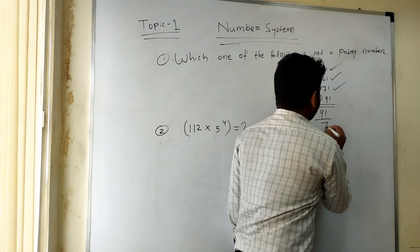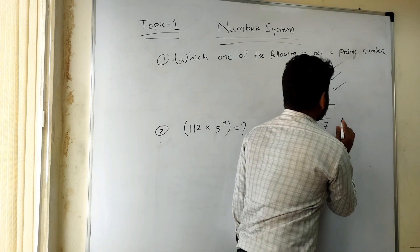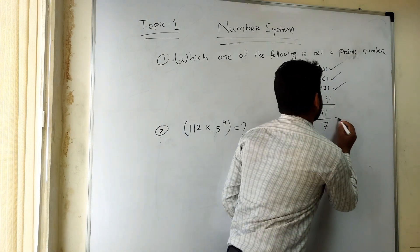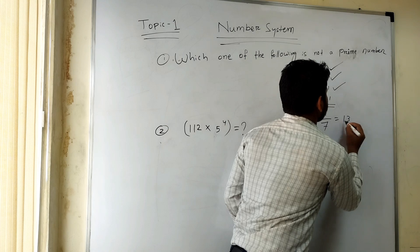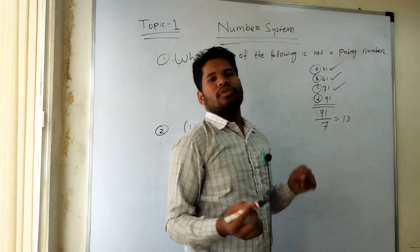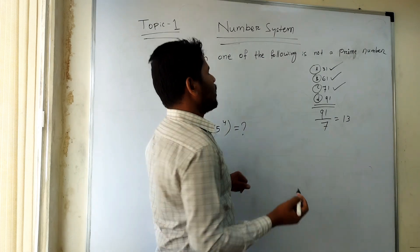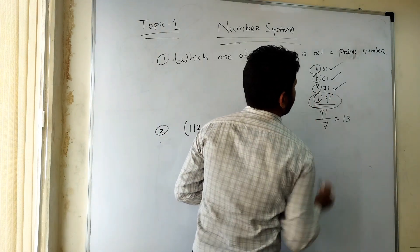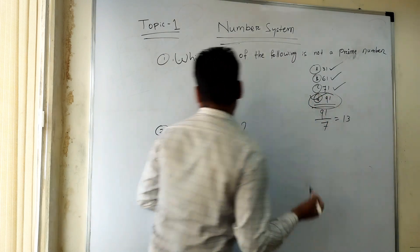But here you can clearly see 91. 91 is divisible by 7. That means if you divide 91 by 7, the output you get is 13. So 91 is clearly divisible by 7, which means it's not a prime number. Here is the answer.